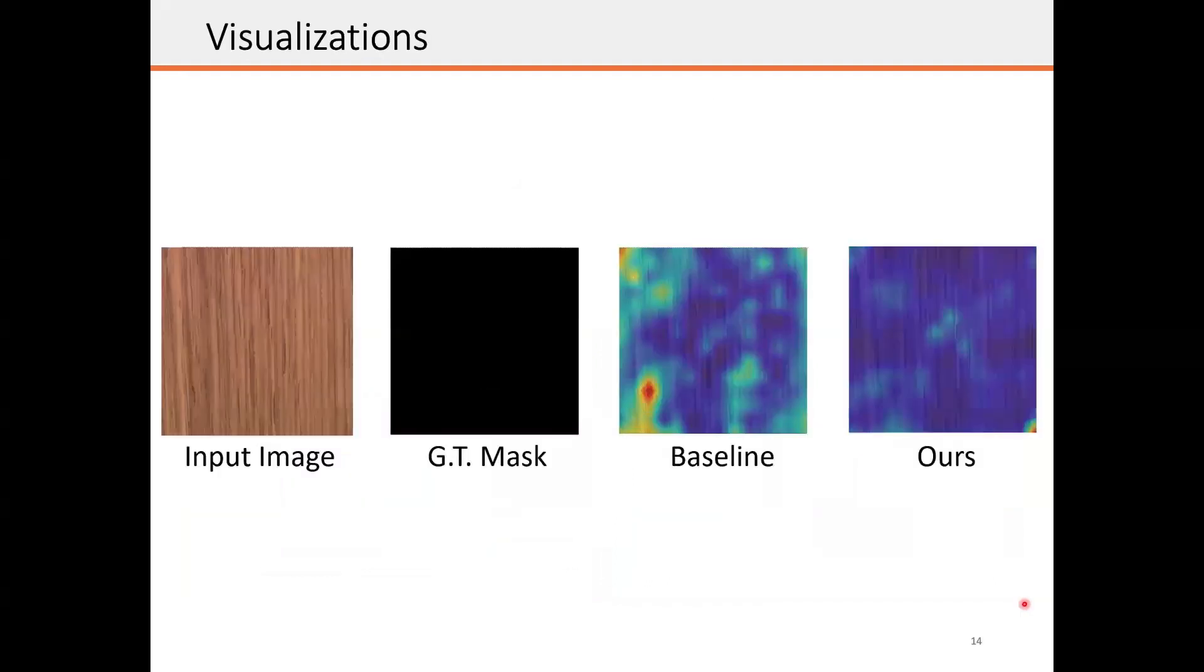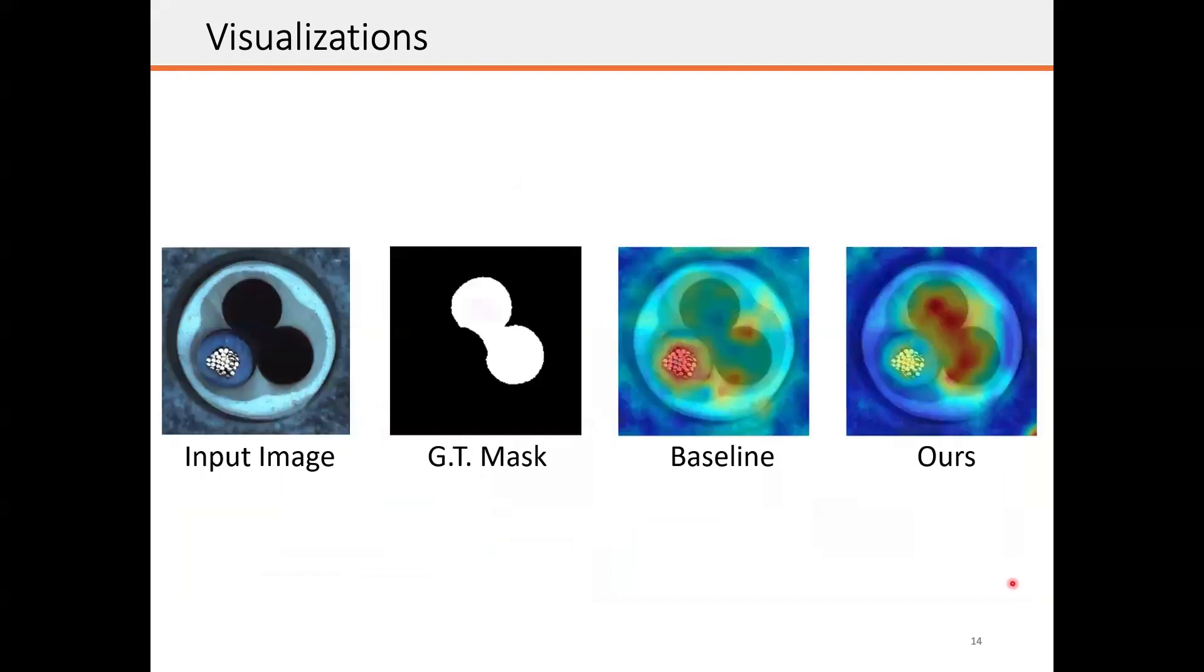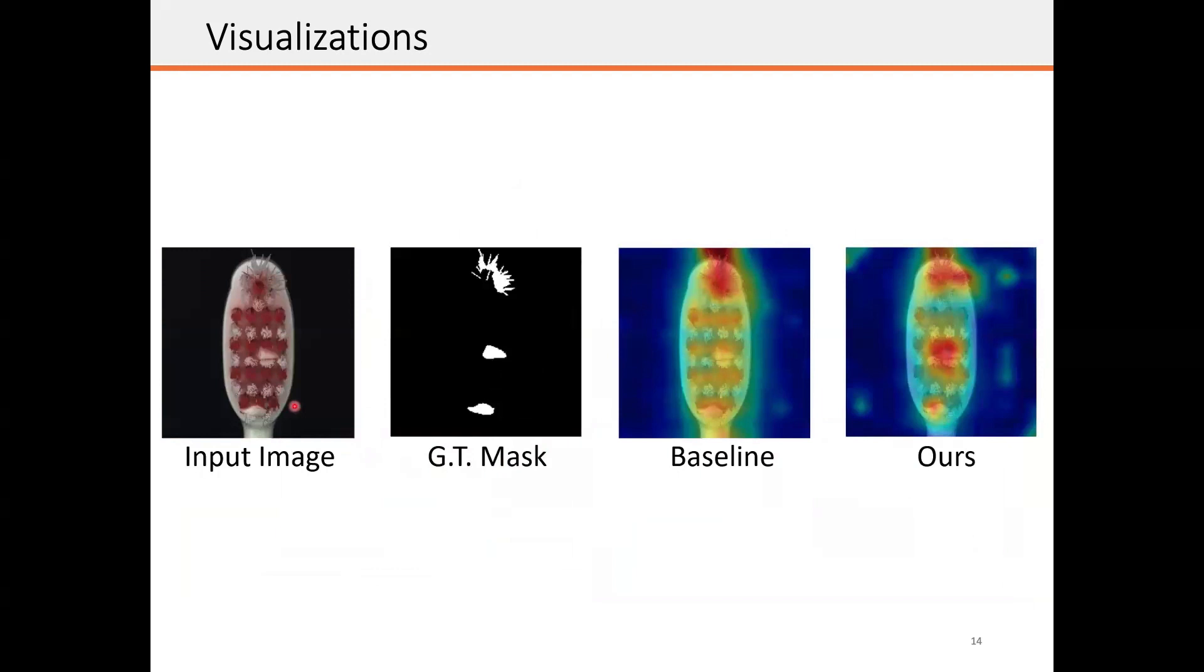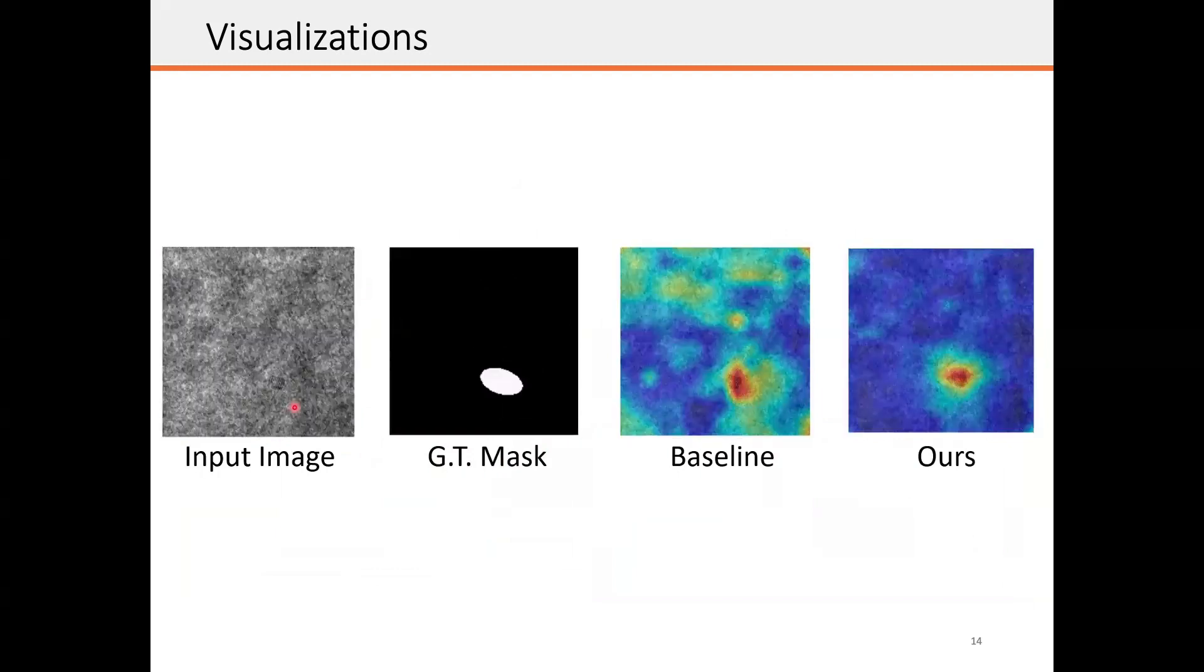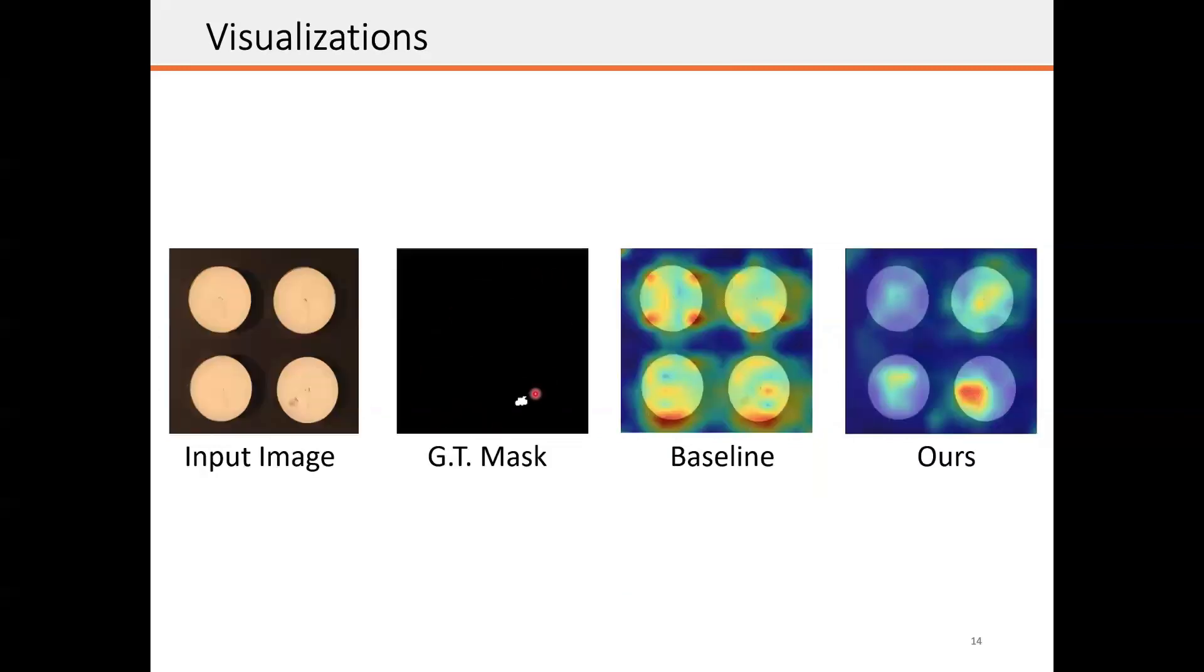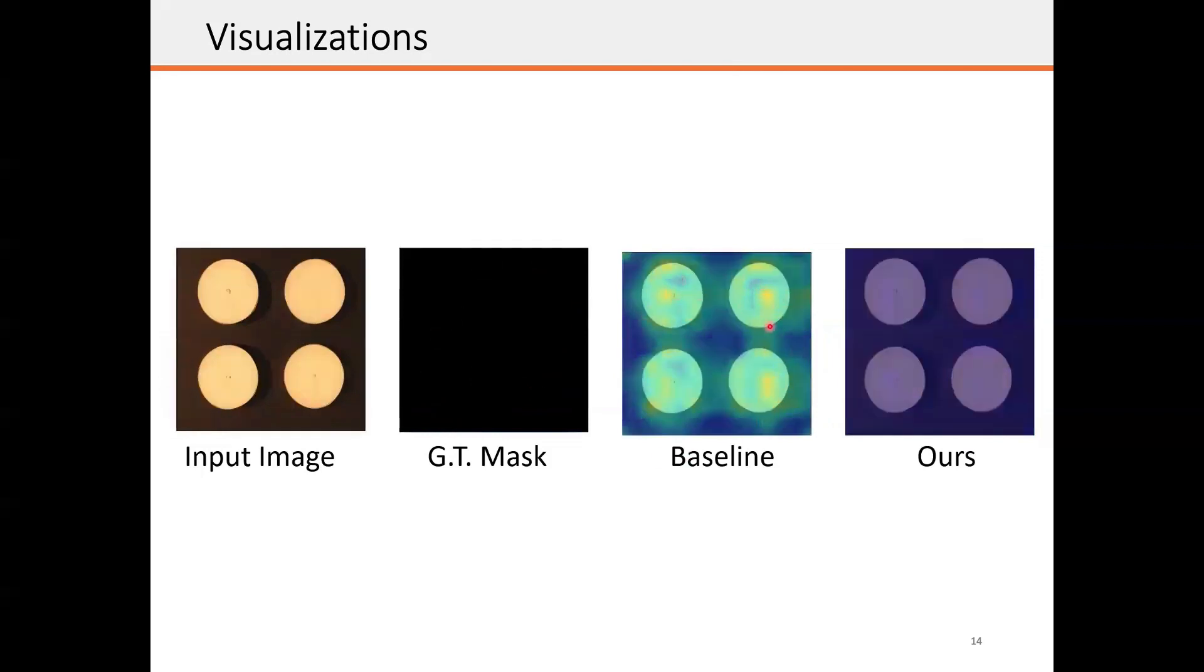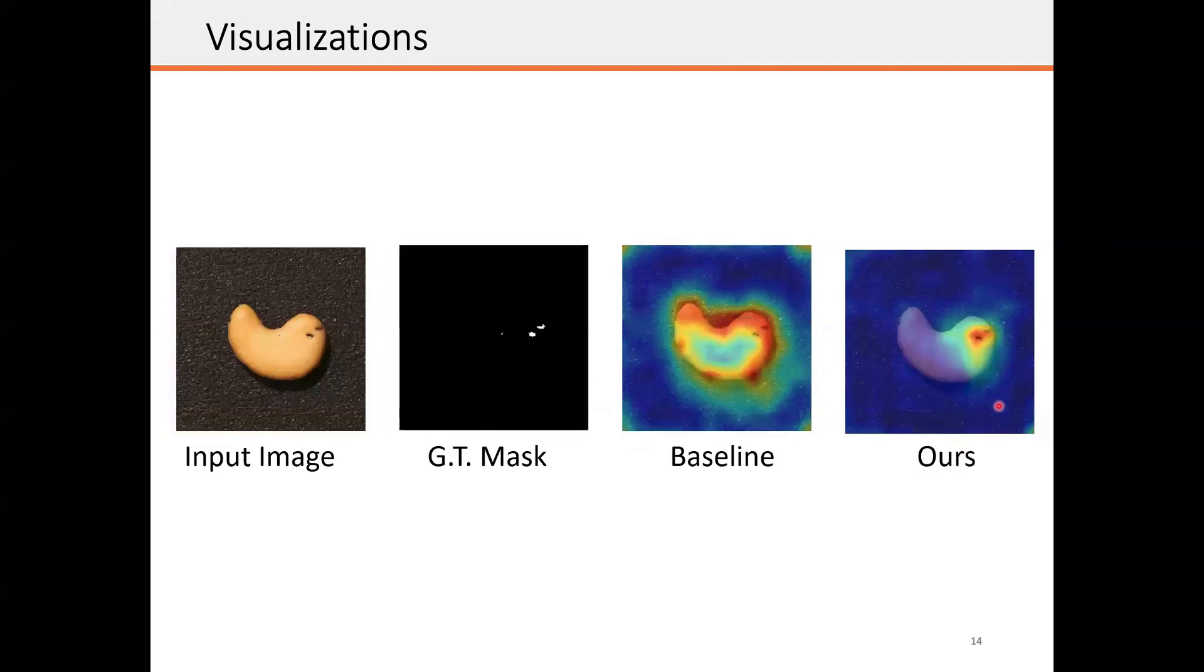Here we show some visualizations of the proposed method, the baselines and also the ground truth. The leftmost image is the input image to the system, which can be the normal image or a defective image. The white region in the ground truth map then shows the defective region. As we can see, the baseline prediction is more spread out and our method can accurately localize the defect.